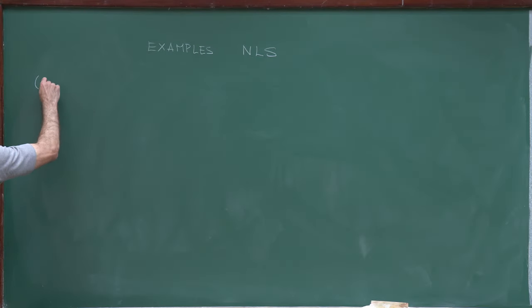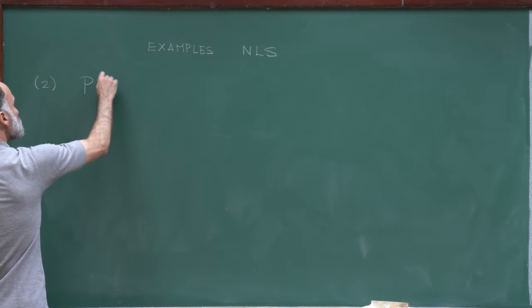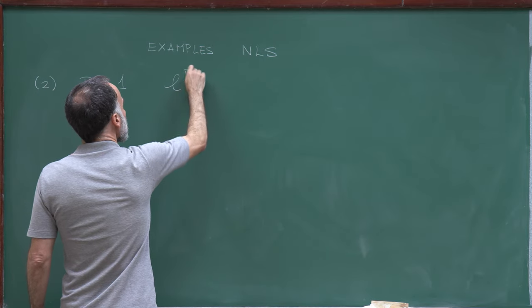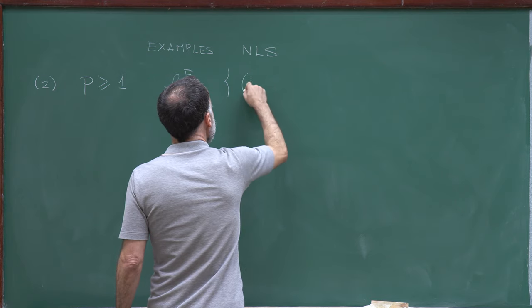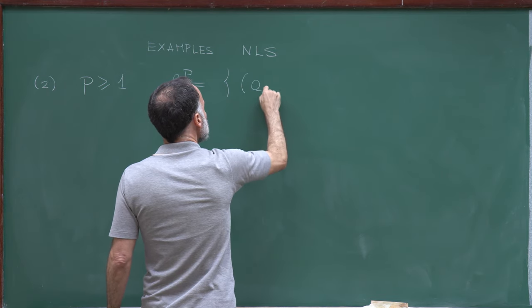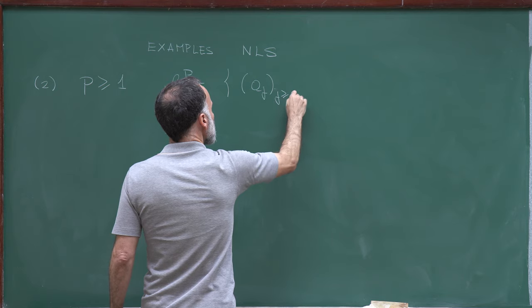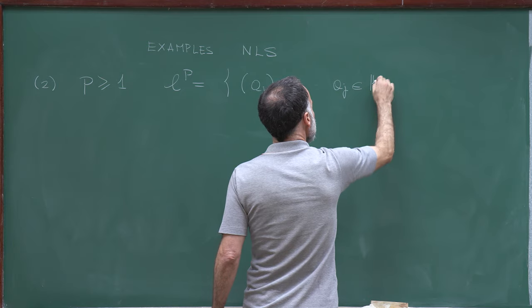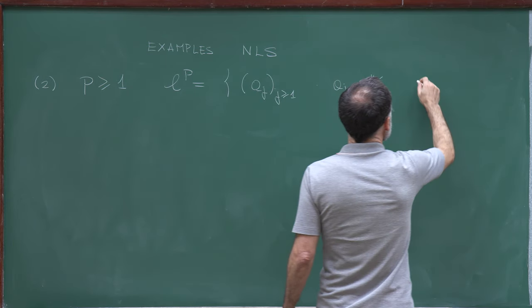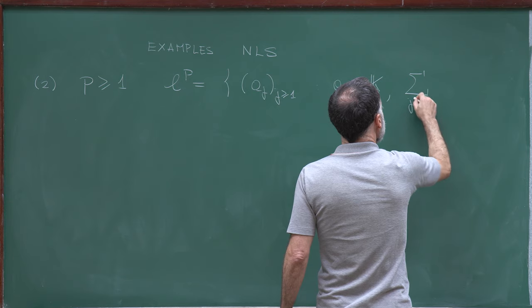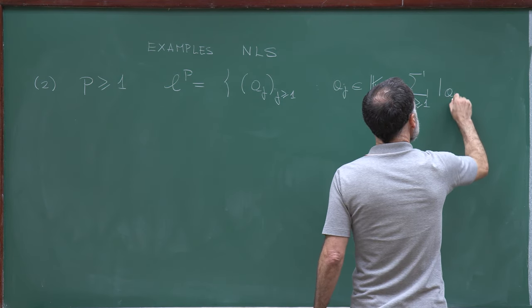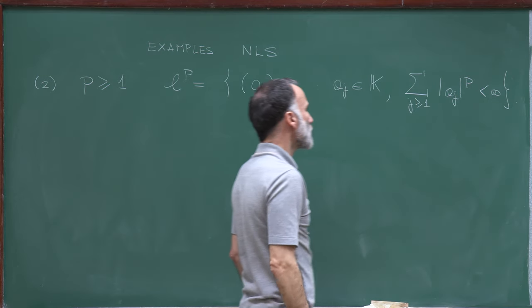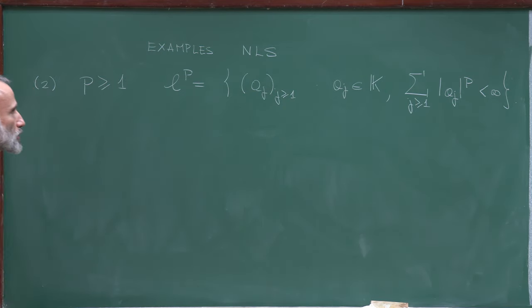My second example is the space Lp. I fix p larger than 1 and define Lp as the space of sequences (aⱼ) where aⱼ belongs to K, and the sum for j ≥ 1 of |aⱼ|^p is finite. This is the definition of the space.